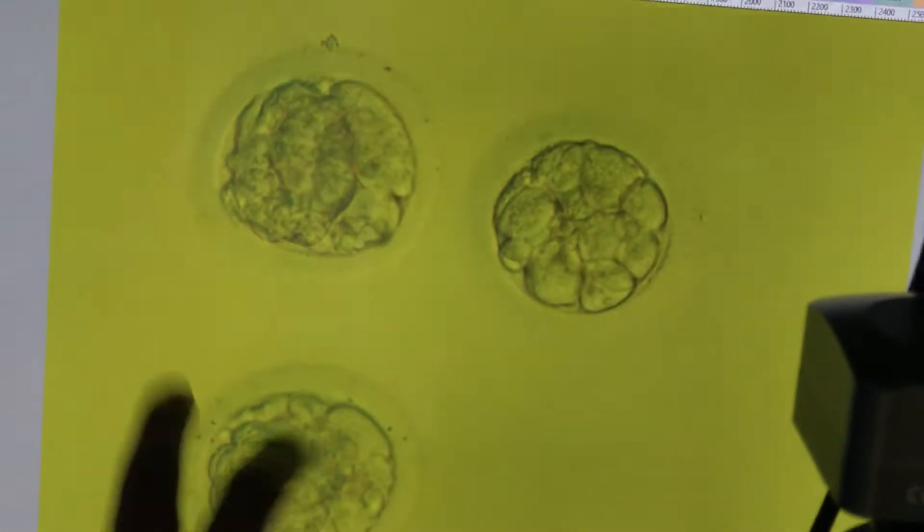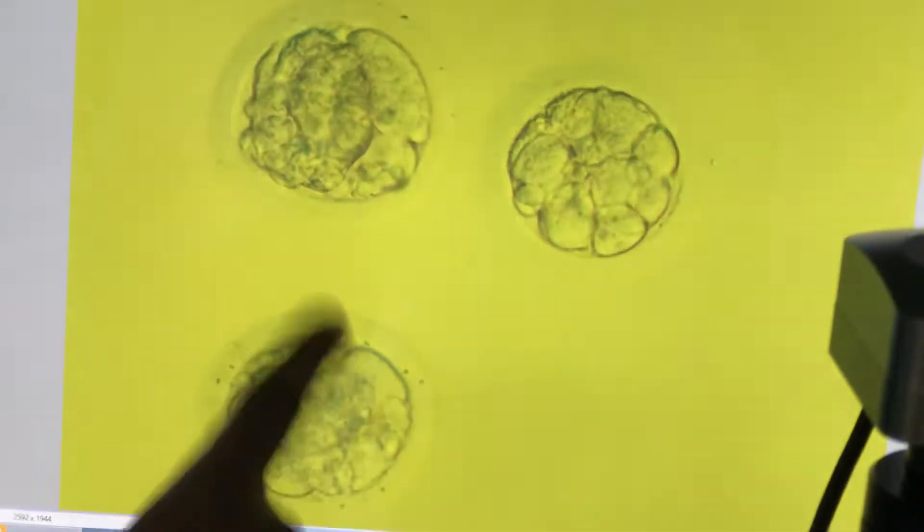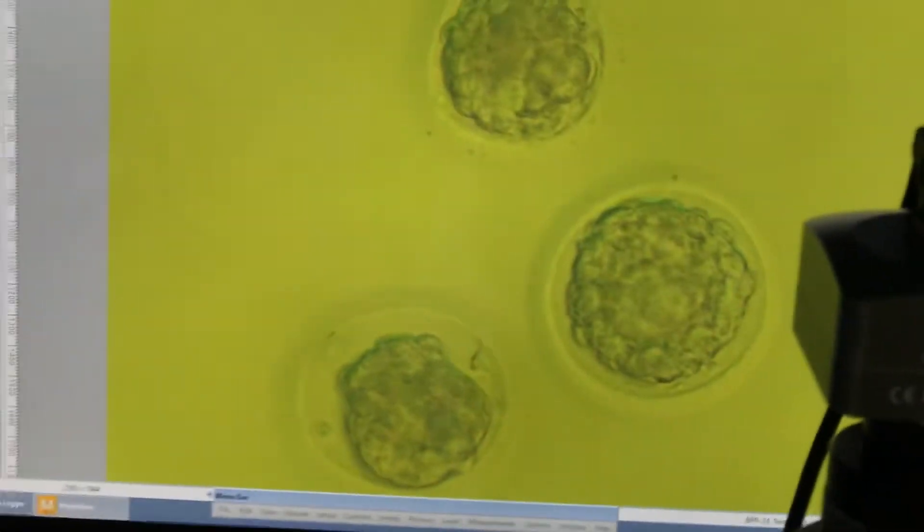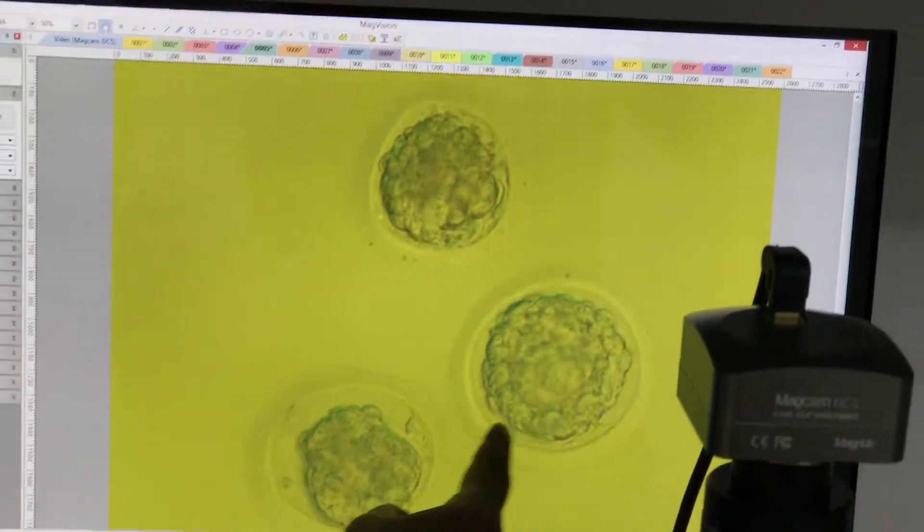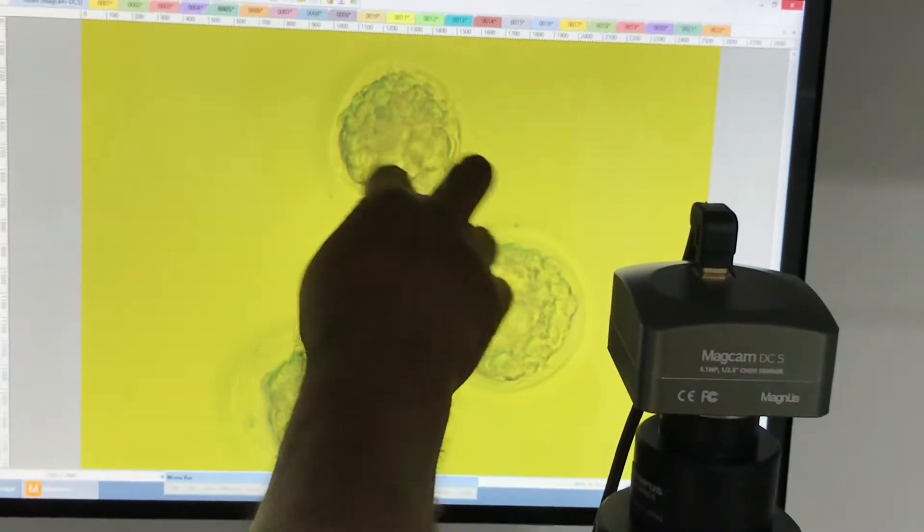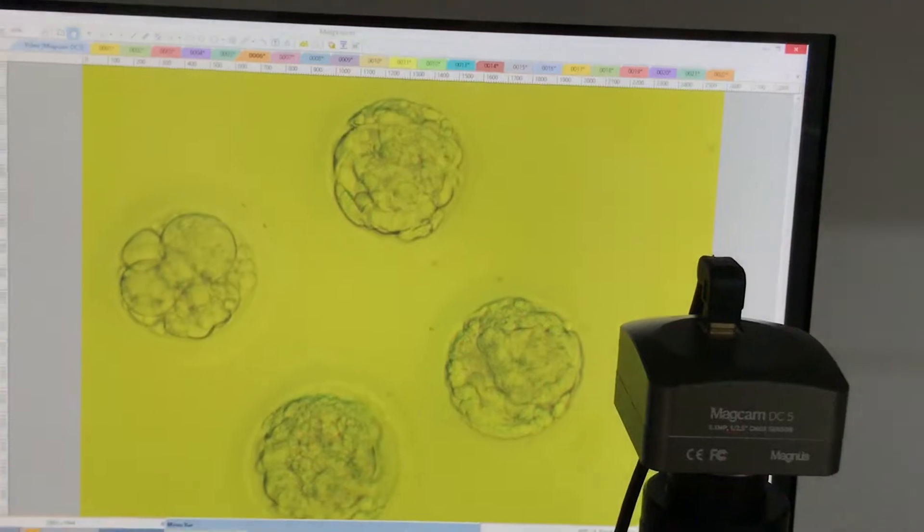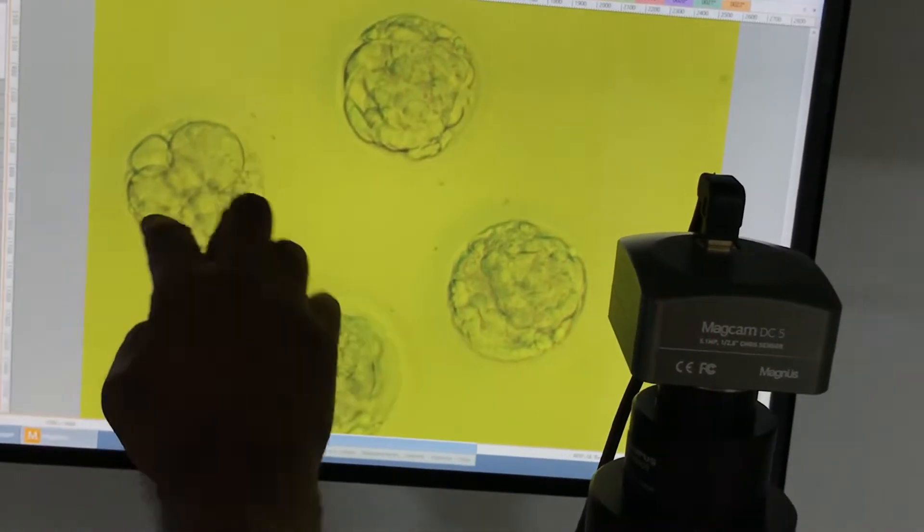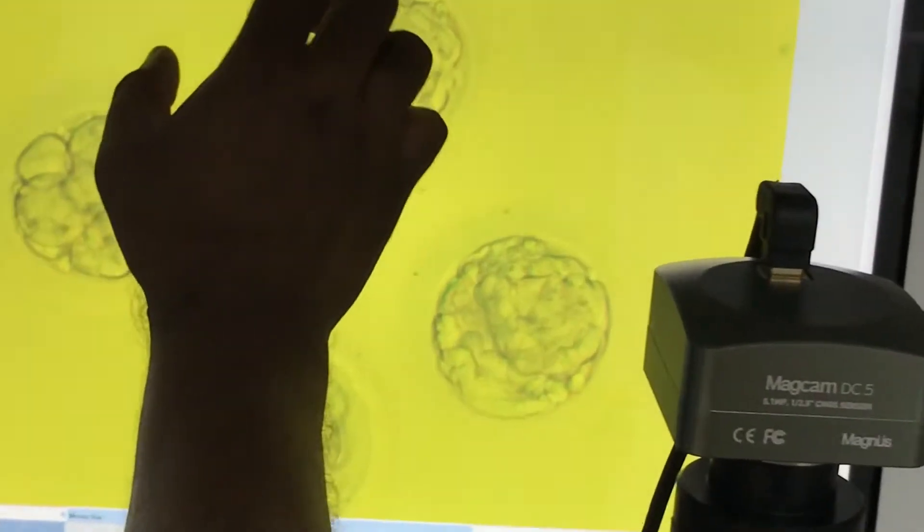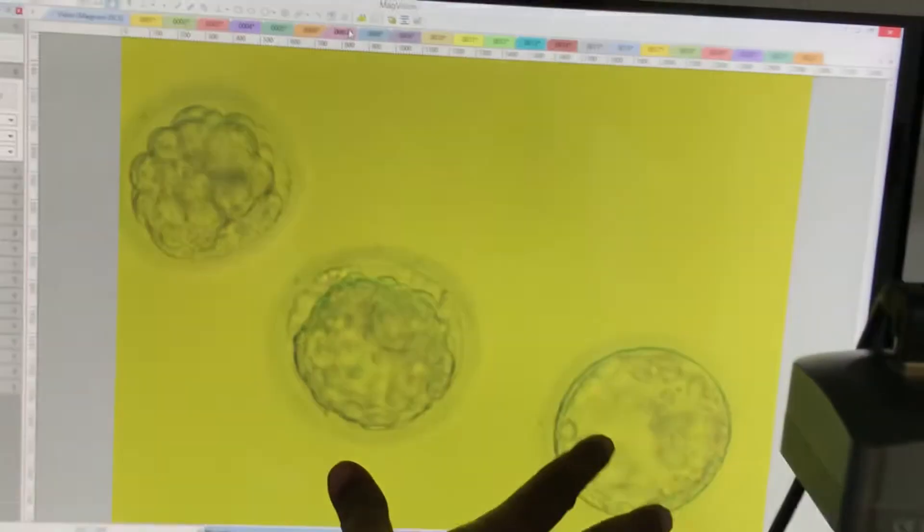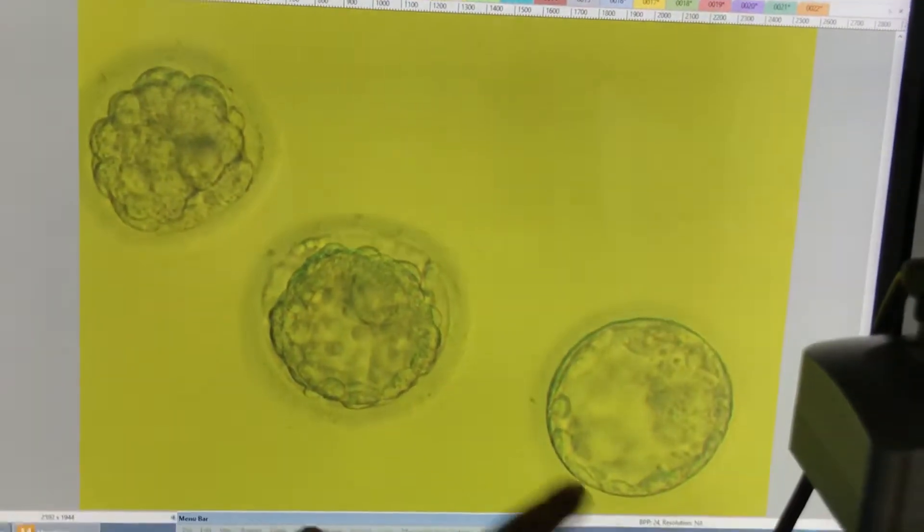Patient number three has two good embryos. Patient number four has two early blasts - this particular case is a little bit slow. Patient number five looks like a 4A, but with lower grading. Patient number six has three good embryos, though this one is a little bit slower.